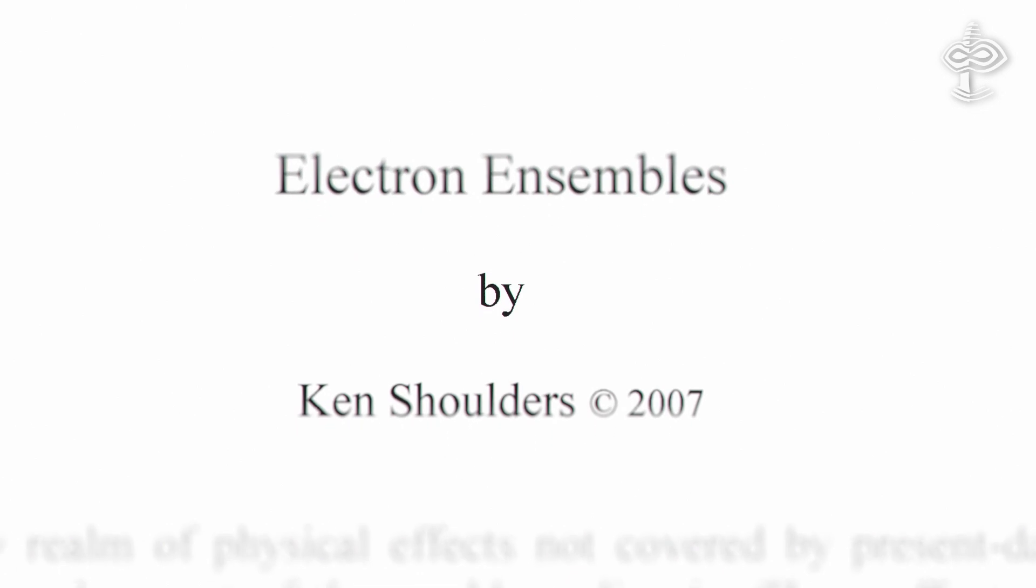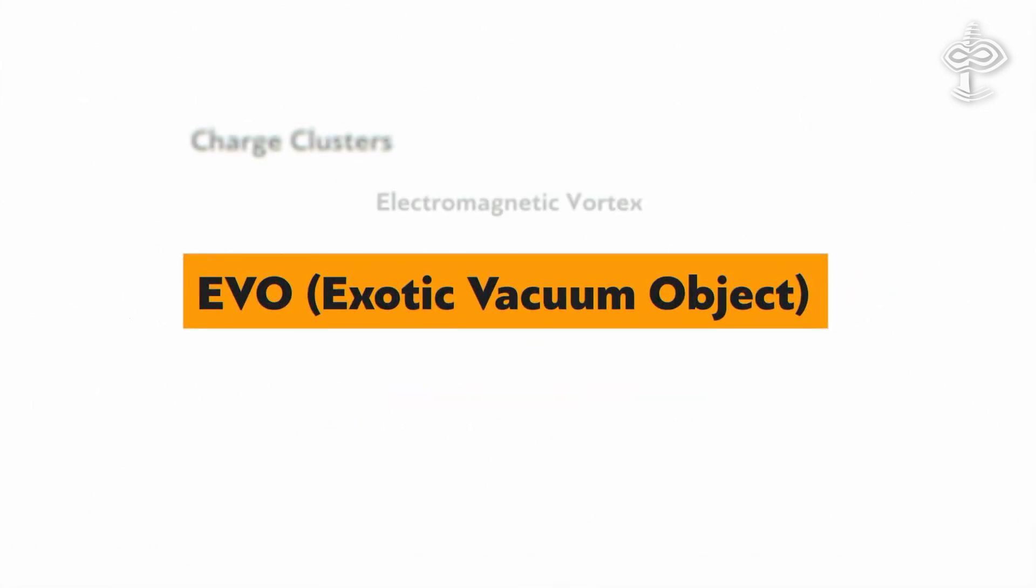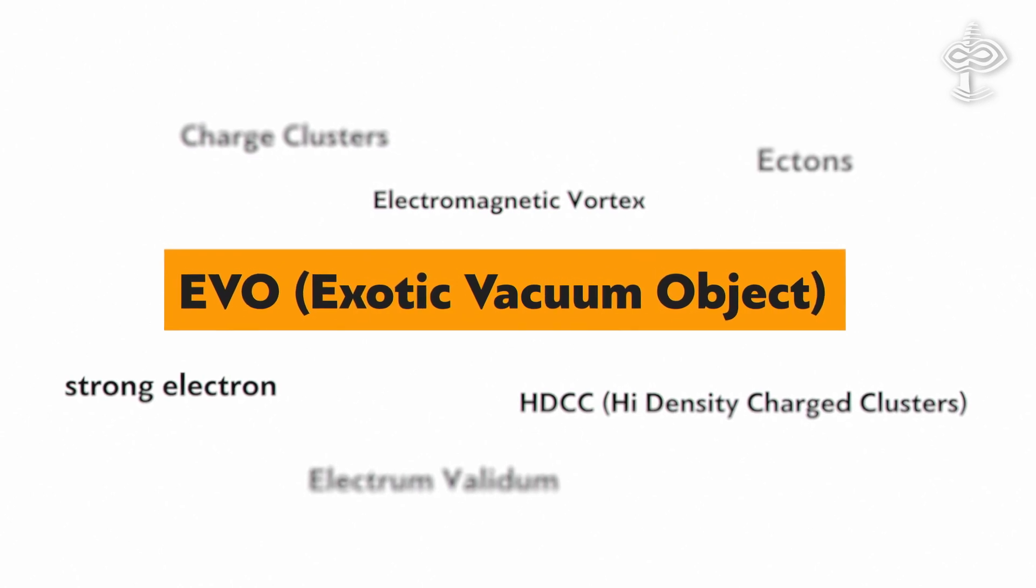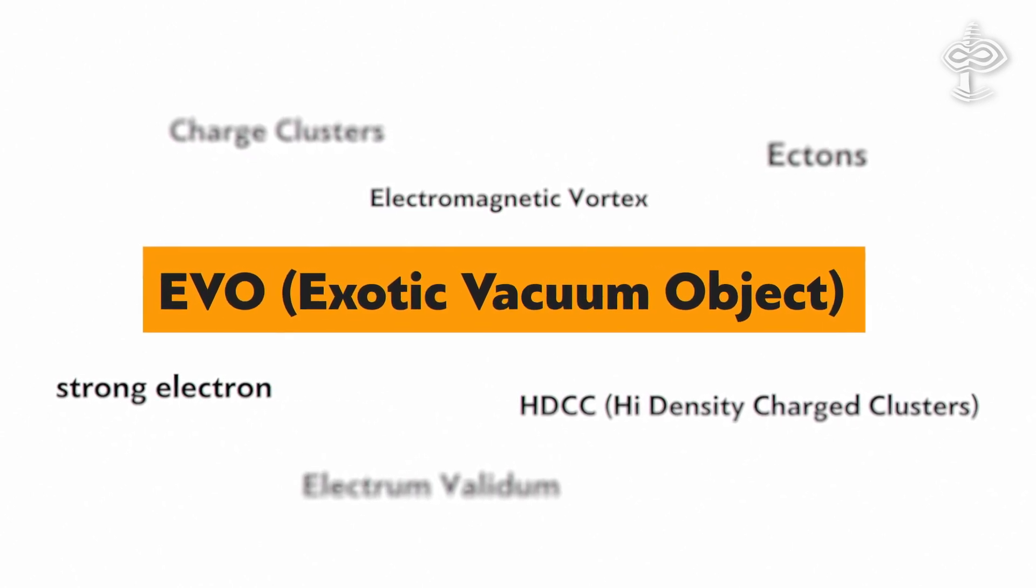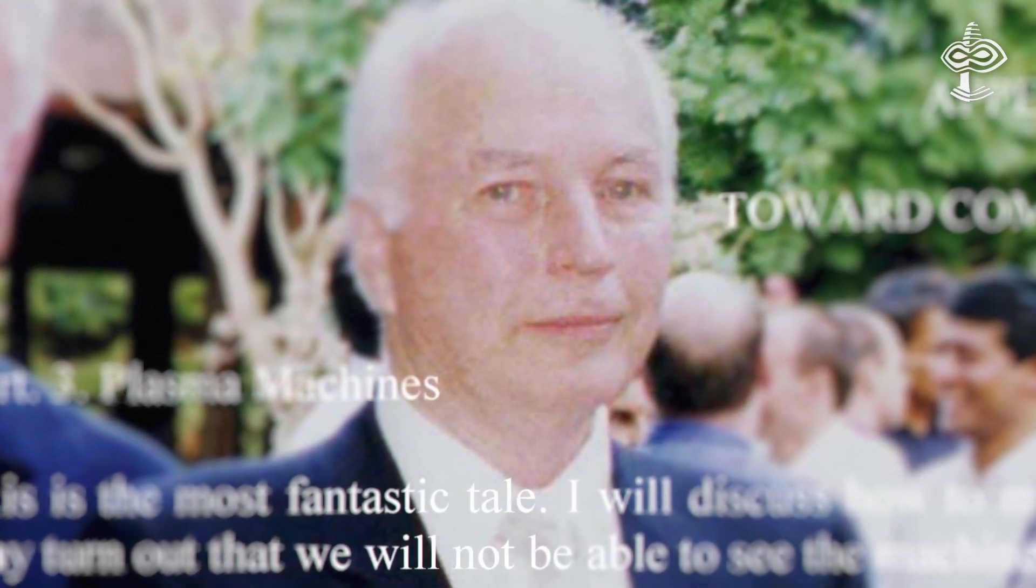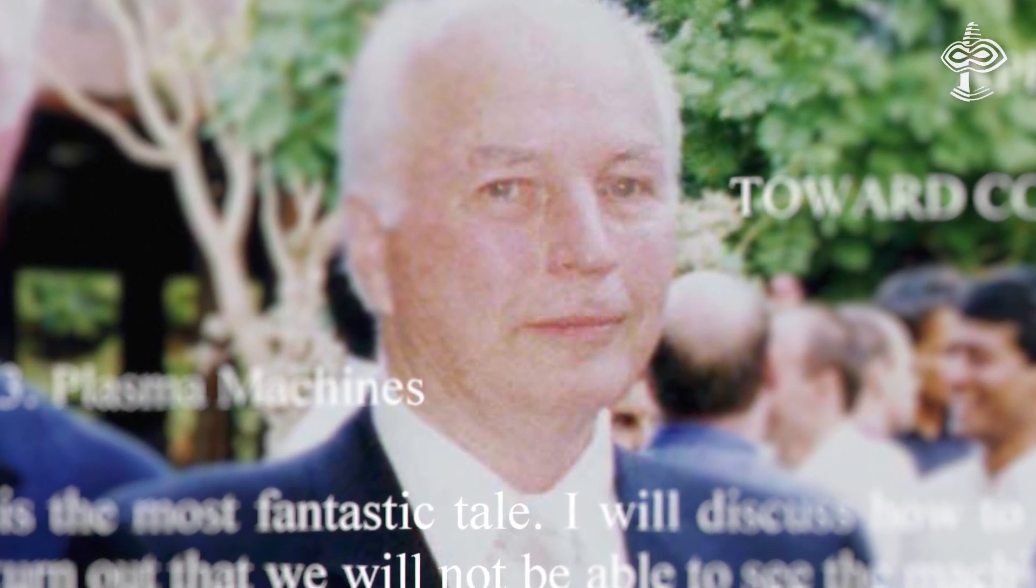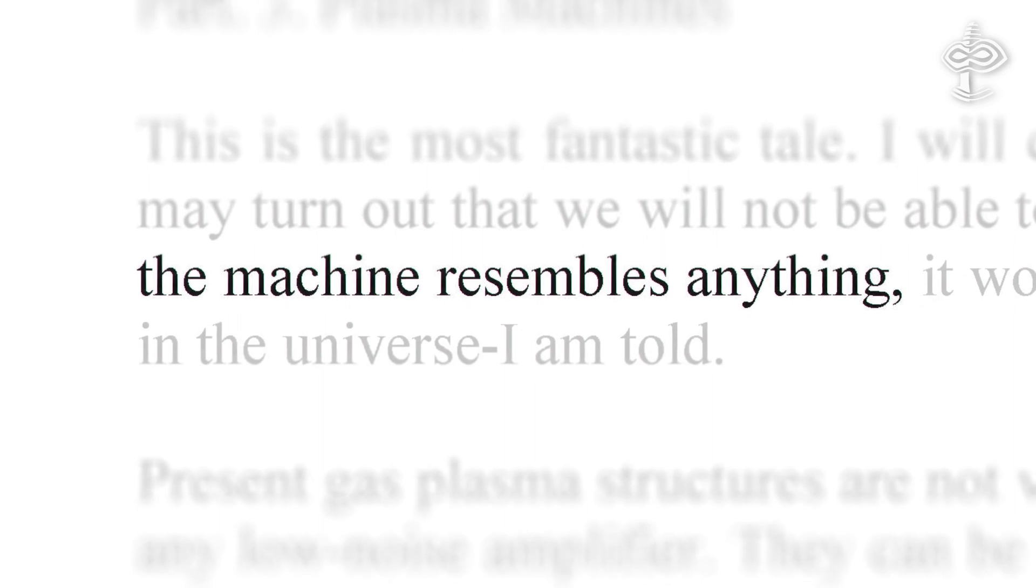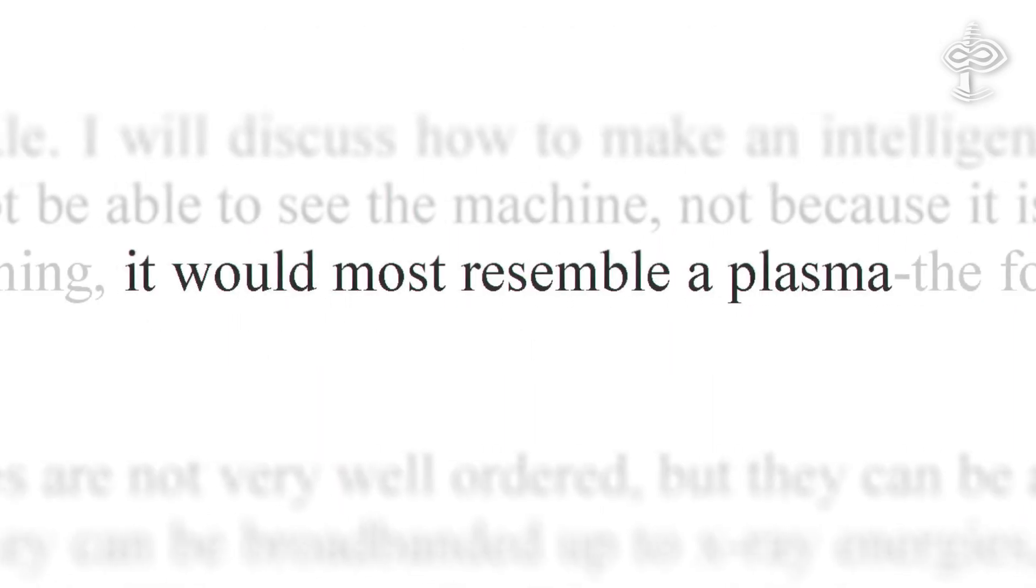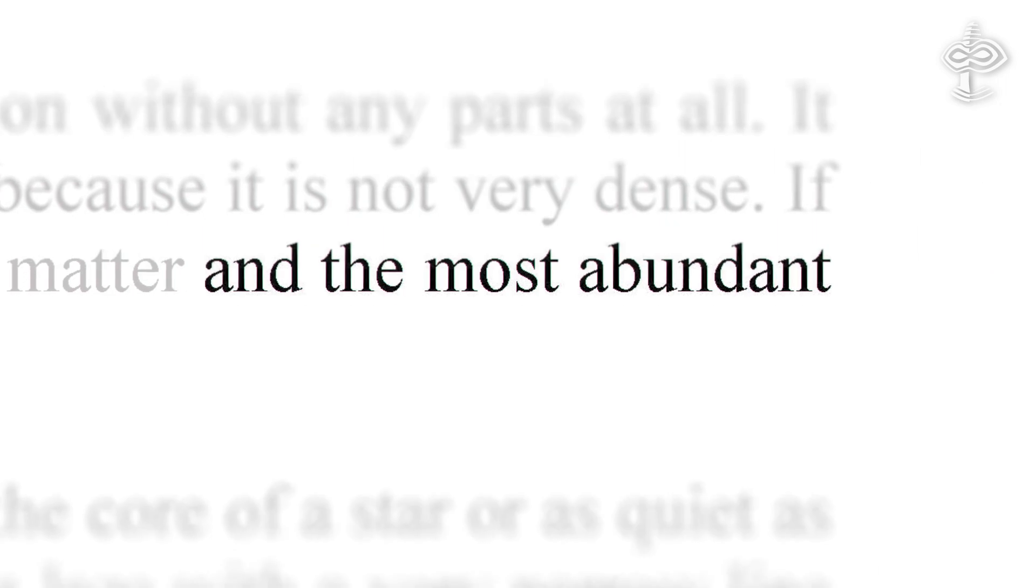Such an ensemble is called exotic vacuum objects, or EVOs, and is just a recent name in a long line of names for an electromagnetic vortex effect in plasma. Shoulders envisioned the possibility of constructing plasma machines based on such exotic vacuum objects' technology. He wrote, quote, if such a machine resembles anything, it would most resemble a plasma, the fourth state of matter, and the most abundant in the universe.